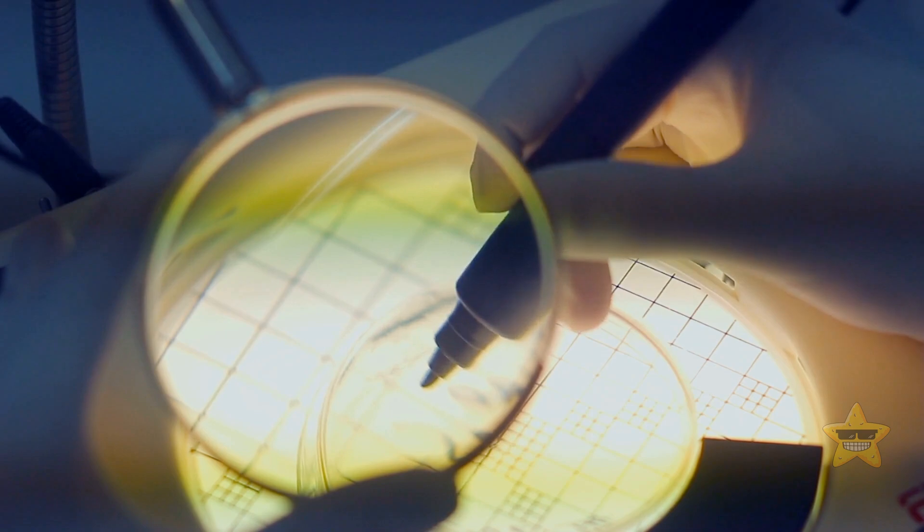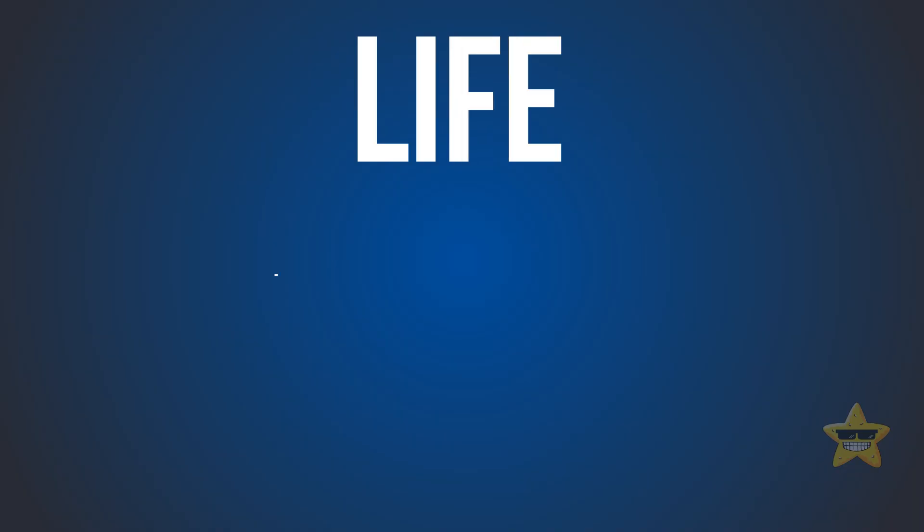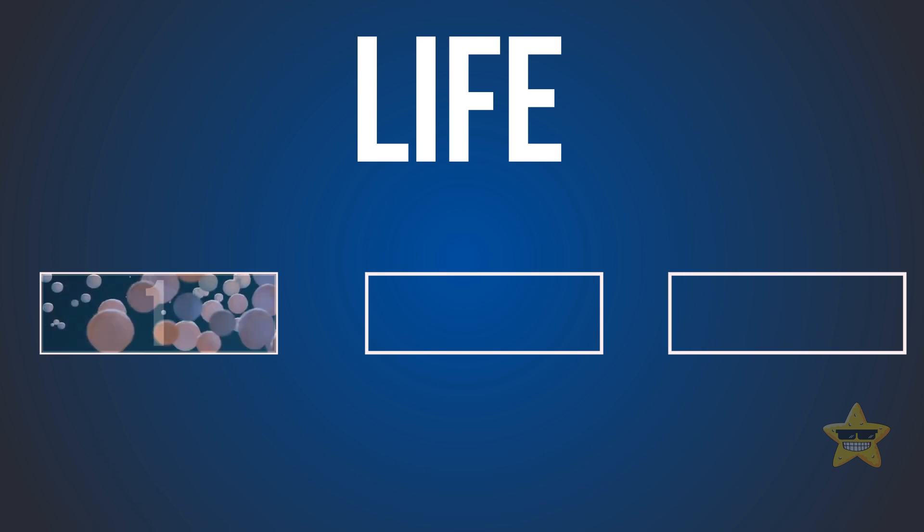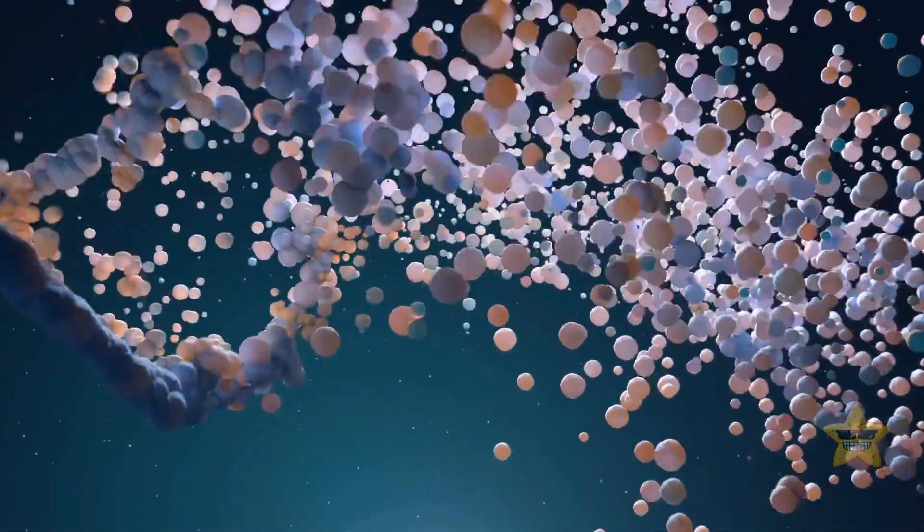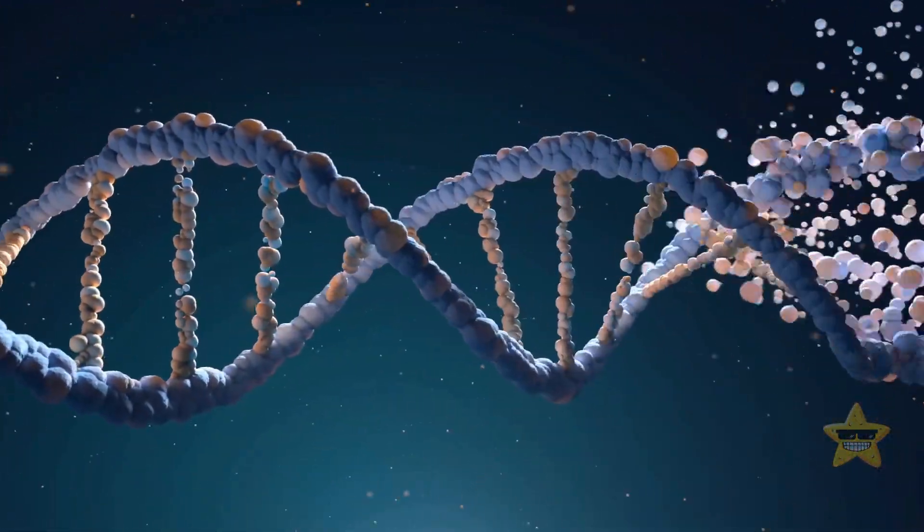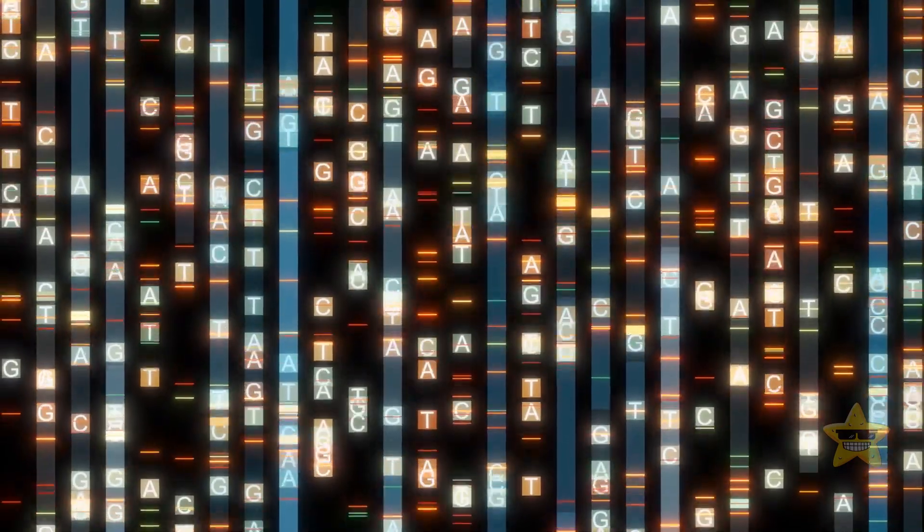To figure out what makes something alive, scientists have come up with three important things that living things must have. First, living things need to store information about themselves. This information tells them how to work and what they're like. It's a bit like having a set of instructions for how they function.